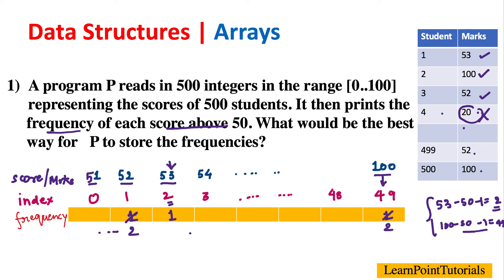The final values in the array tell you all the frequencies above 50 — for scores 51, 52, and so on up to 100. An array of size 50 is sufficient to represent this data, so the program can simply use an array of size 50. That's the answer.